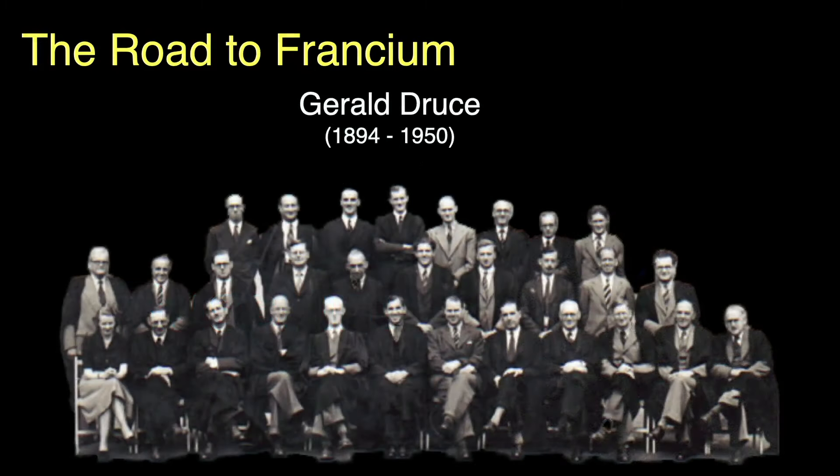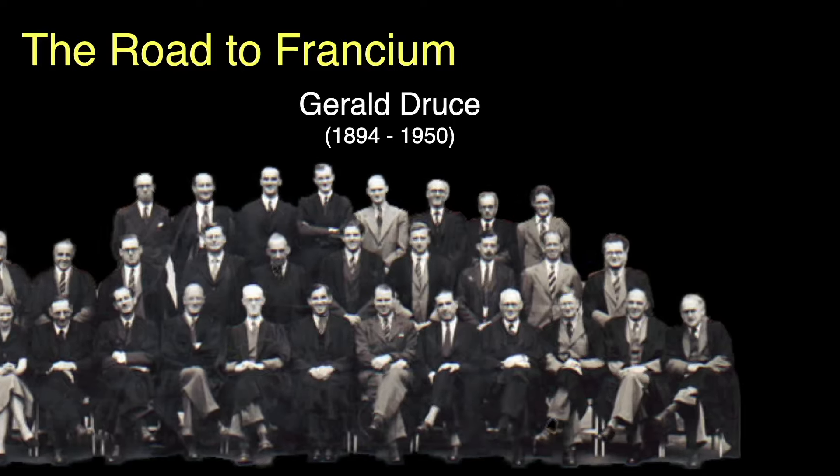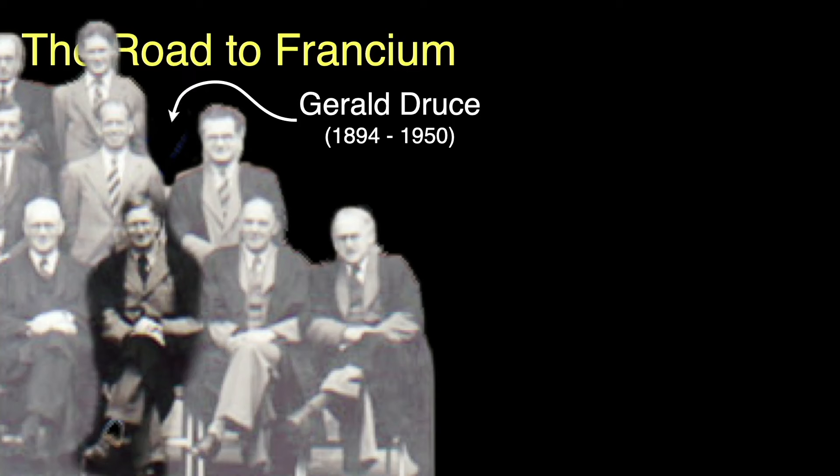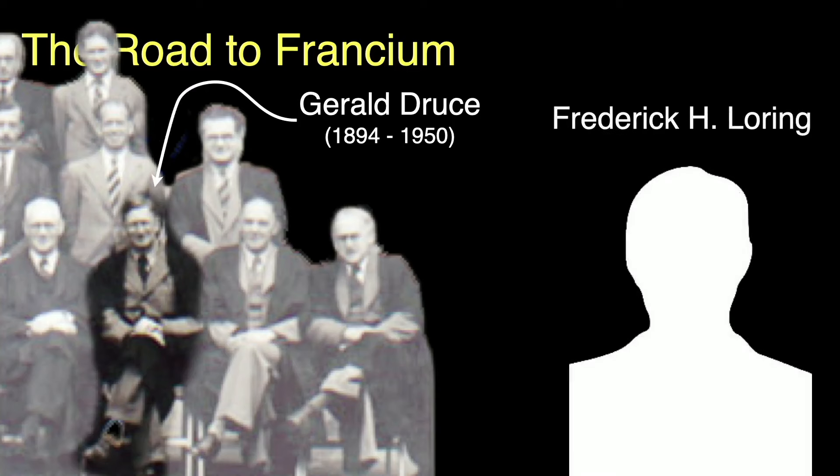One year later, English chemist Gerald Druce, seen here in this faculty photo, let me magnify and highlight Druce, and Frederick Loring, sorry, no photo, observed X-ray spectra of manganese sulfate and were convinced they were seeing emissions due to francium. They called their new element alkalinium, chemical symbol AK, because this element was an alkali metal. They were mistaken.